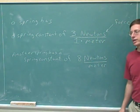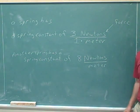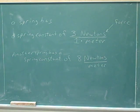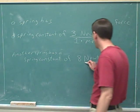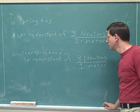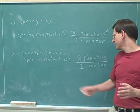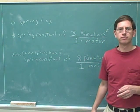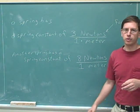Let's think about a second spring. This second spring has a spring constant of eight newtons per meter. If we compress this spring by one meter, it's going to push back against us with eight newtons of force. Or if we stretch the spring by one meter, it's going to pull against us with eight newtons of force.